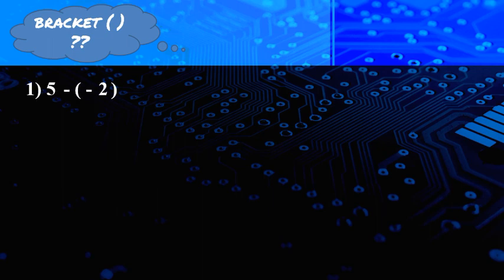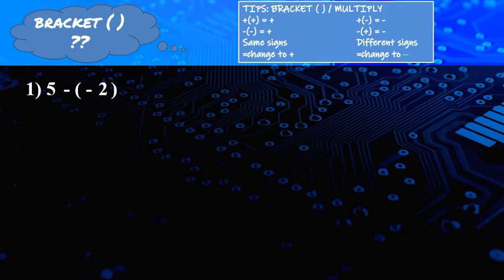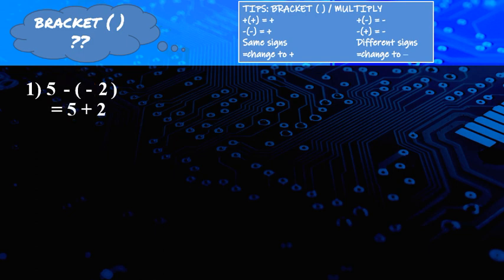Next: if given brackets — for example, 5 minus negative 2. The tip for brackets (which also applies to multiplication): if same sign — positive positive, or negative negative — you change to plus. If different sign, you change to minus. So 5 minus (negative 2): minus and minus is the same sign, so change to plus. It becomes 5 plus 2 equal to 7.